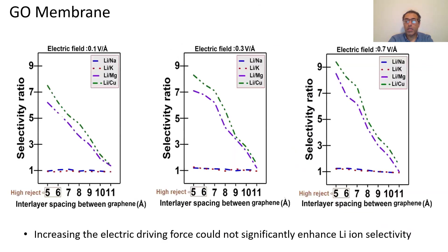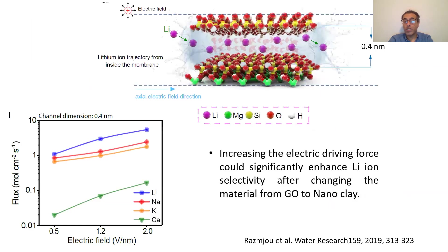We also found that for graphene oxide membranes, increasing the electric driving force could not significantly enhance lithium-ion selectivity. However, when we changed the material, the membrane showed higher lithium selectivity after increasing the applied potential — meaning the material matters a lot.